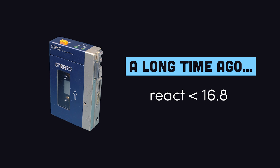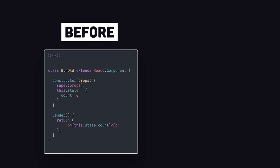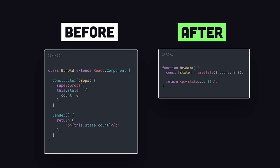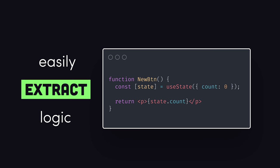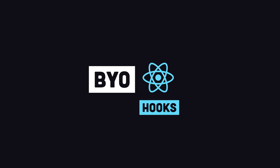But prior to React version 16.8, developers were required to write classes to take advantage of certain React features. You can still use classes in React, but hooks generally provide a more ergonomic way to build components because you can reuse stateful logic without changing your component hierarchy. React has 10 built-in hooks, and you'll understand what every single one of them does by the end of today's video. You'll also learn how to build your own hooks from scratch to extract component logic into reusable functions.